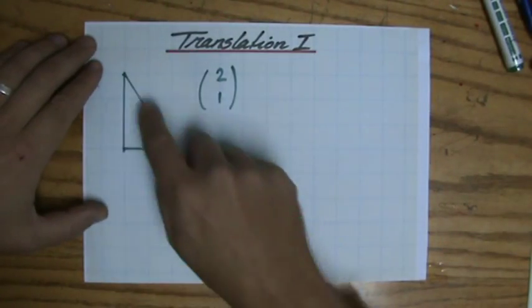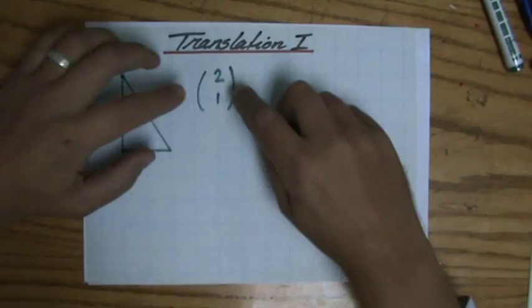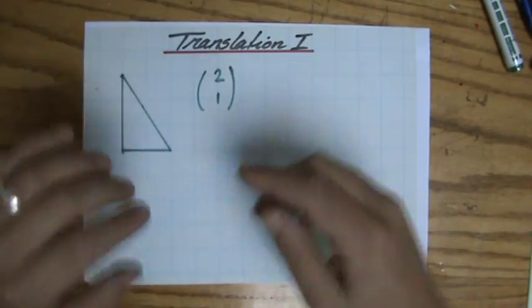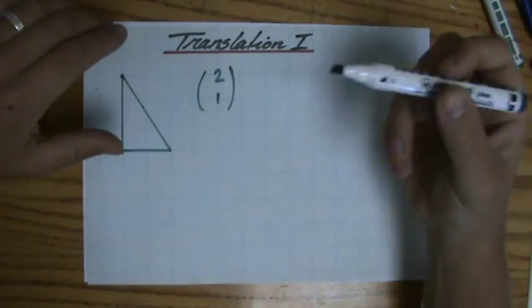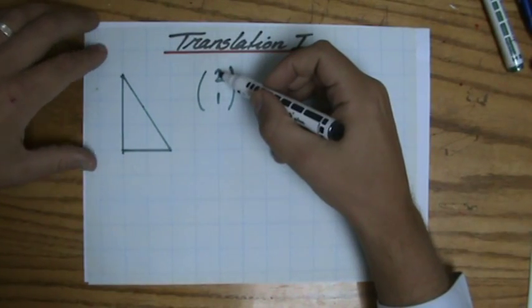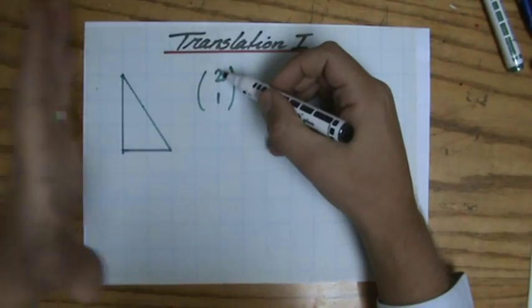Let's have a look. I have prepared this triangle for you, and I have to translate it using the column vector (2,1). As I told you before, that top number in that column vector is your horizontal